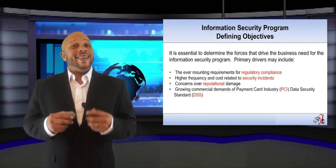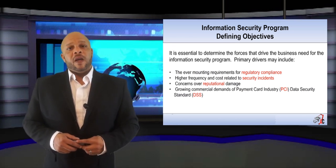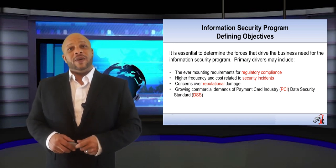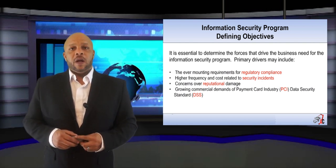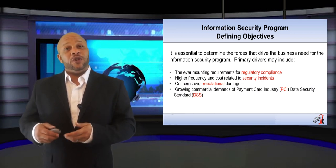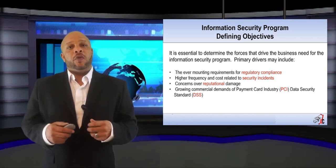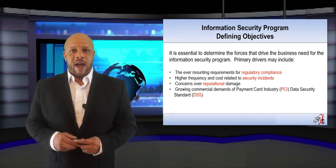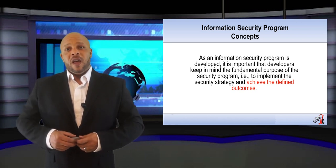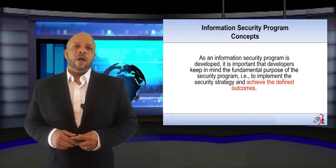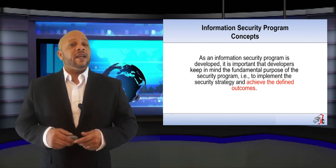One of the ways that we do this is by identifying the forces that drive the business need for information security. Across the industry, you can really boil it down to a handful of items, like the ever-mounting requirements for regulatory compliance, higher frequency and total cost of security incidents, organizational concerns over their reputation, and the growing demands of PCI and DSS compliance. As we continue to define and implement our program, it's important to remember why we're doing it in the first place — it all must be aligned with the security strategy formulated with executive management.